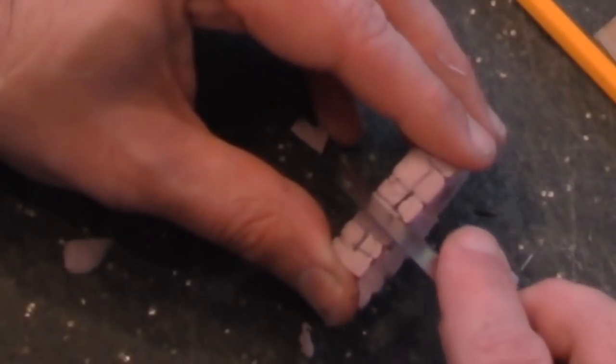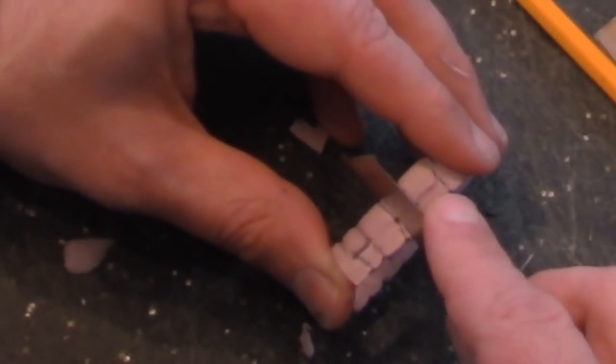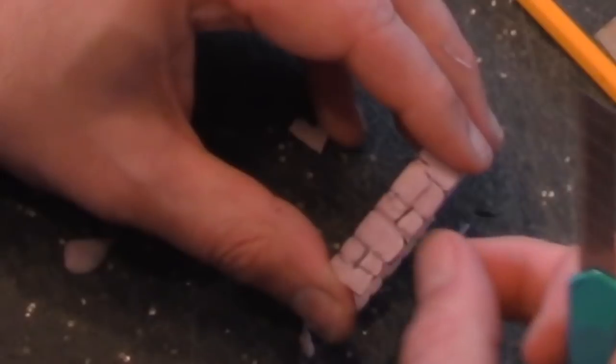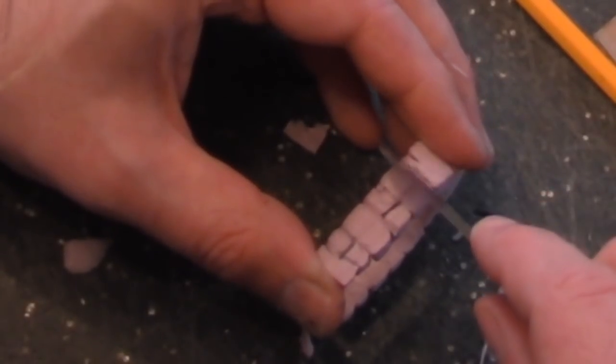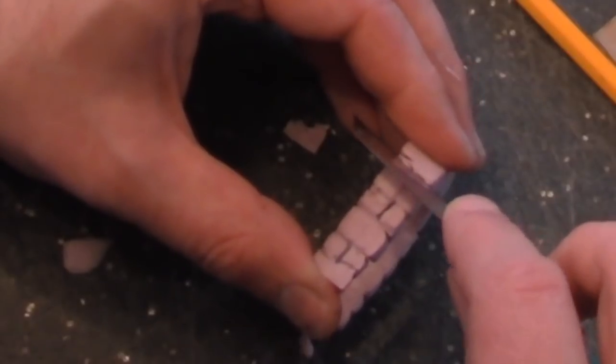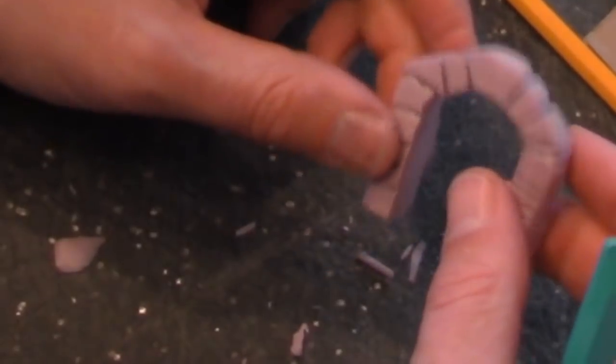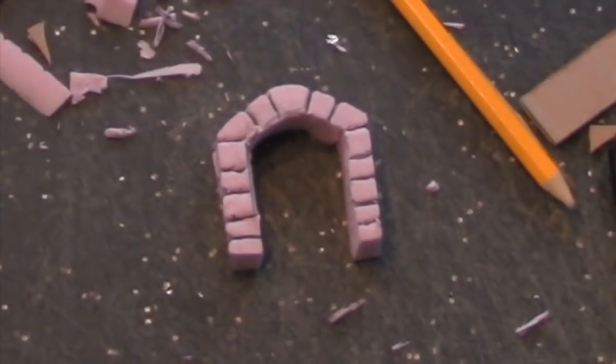I bevel the mortar lines by making shallow cuts on either side and removing the center. This really makes it look like each block is an individual stone.